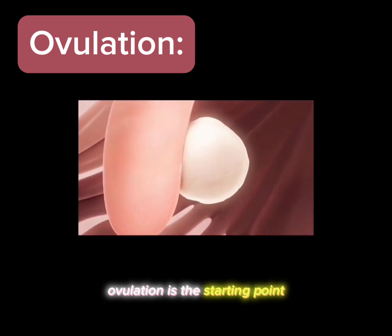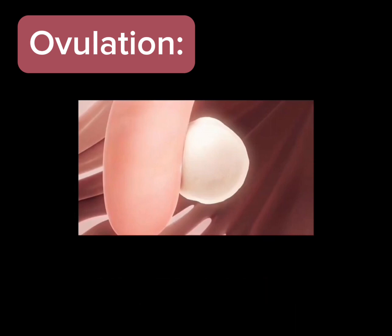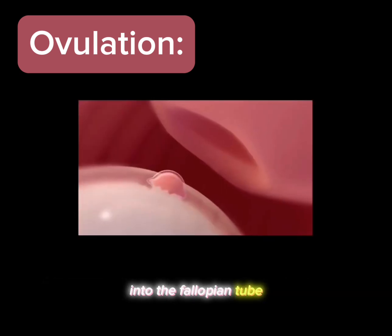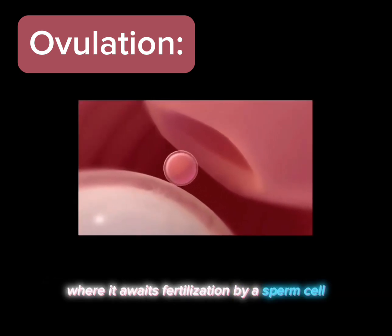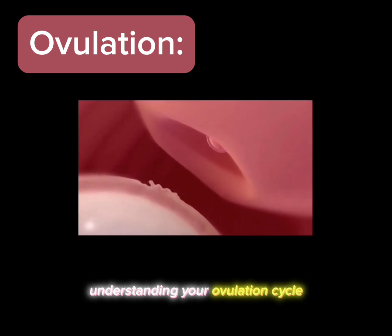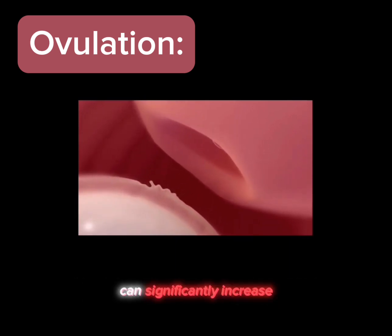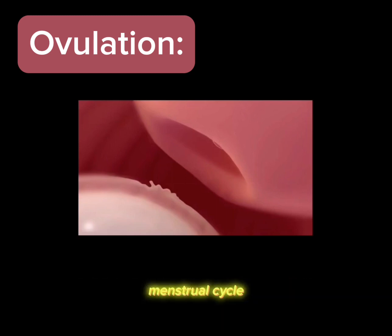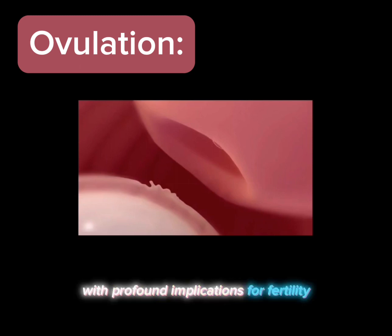Ovulation is the starting point for the potential creation of life. During ovulation, hormonal changes trigger the release of the egg into the fallopian tube, where it awaits fertilization by a sperm cell. Understanding your ovulation cycle can significantly increase the chances of successful conception. Ovulation is a pivotal event in a woman's menstrual cycle with profound implications for fertility.